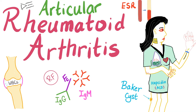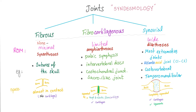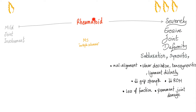With that being said, now let's get started. Joints are either fibrous, fibrocartilaginous, or synovial. Which one is affected by rheumatoid? The answer is synovial, and this is really important.